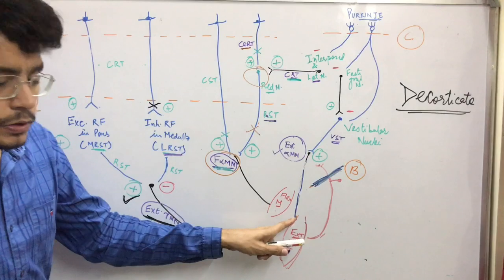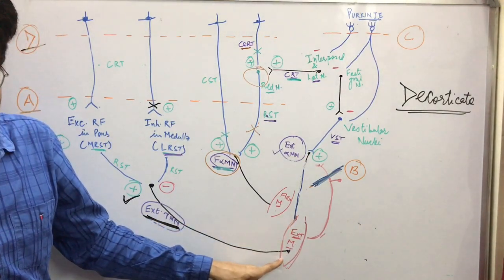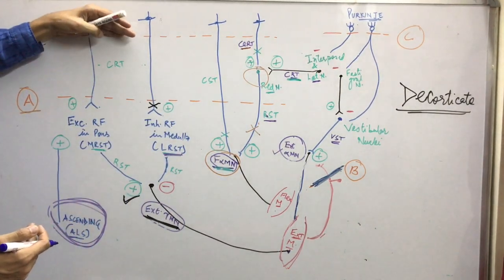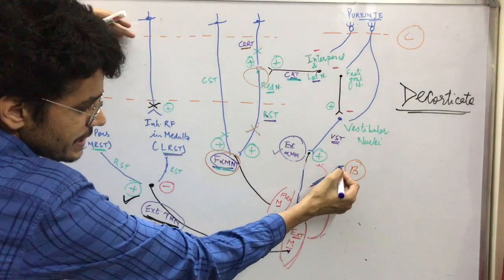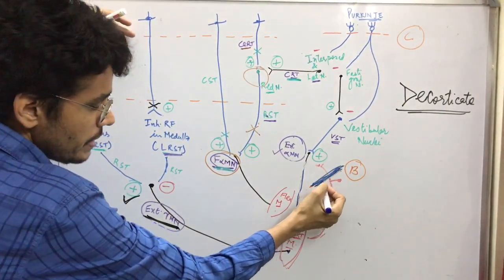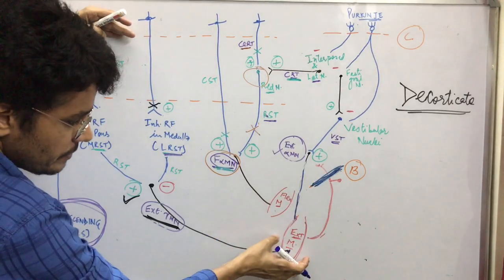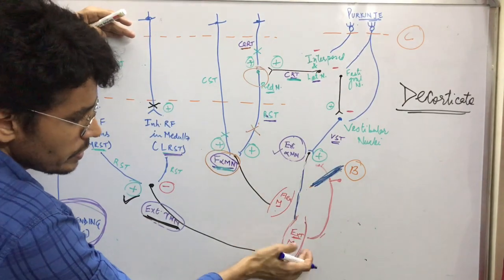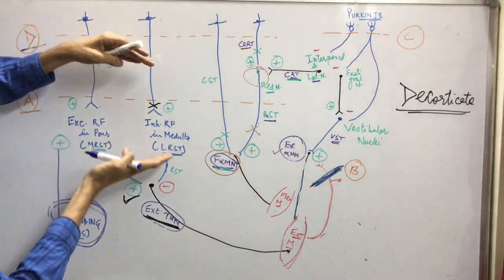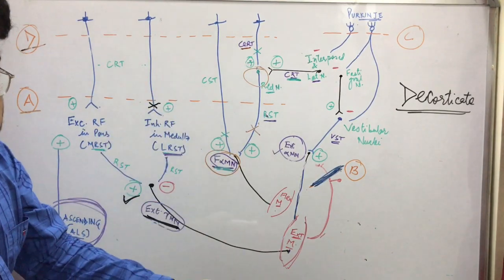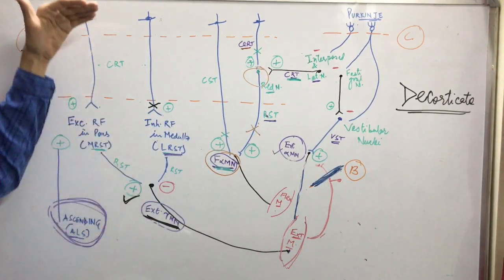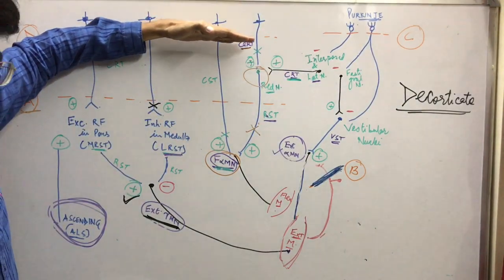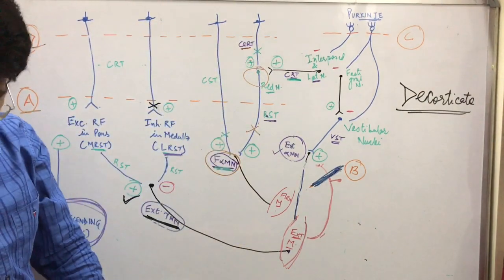So if we cut that dorsal root, the alpha motor neuron won't get stimulated and there shouldn't be contraction. But if the person who is suffering from decorticate rigidity undergoes this dorsal root cut section experiment, and the extensor muscle was getting contracted just because of the alpha motor neuron, then that rigidity of the extensor muscle should have been reduced. Did you get the point?